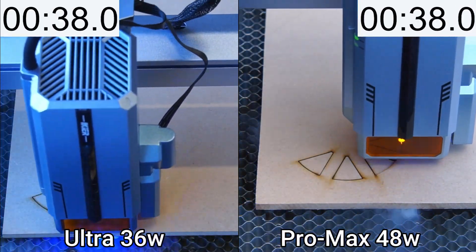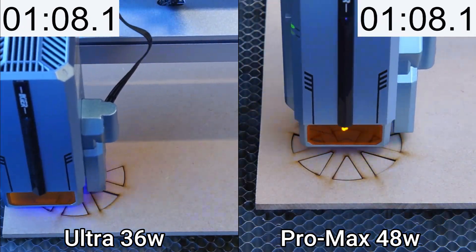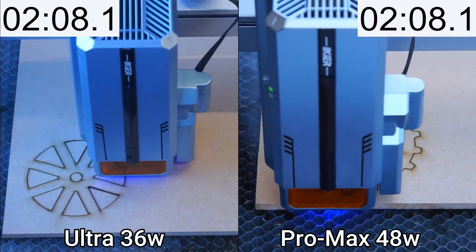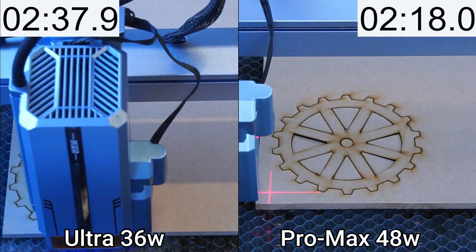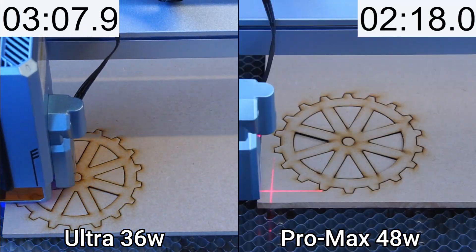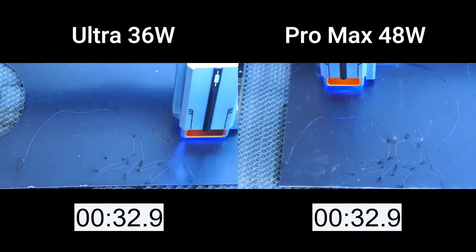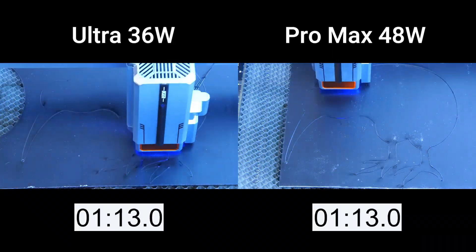For comparison I have the Ultra on the left and the Pro Max on the right. The Pro Max is rated to have 30 percent more laser output power compared to the Ultra, and the results from this cut test confirmed that extra laser power translates into roughly 30 percent faster cutting.